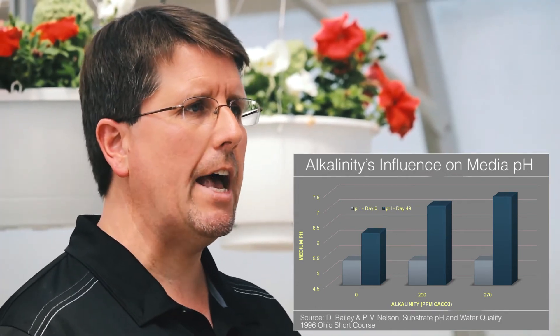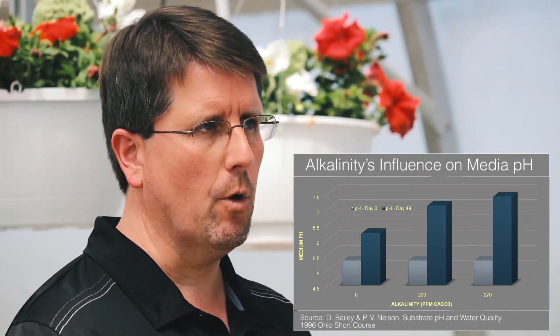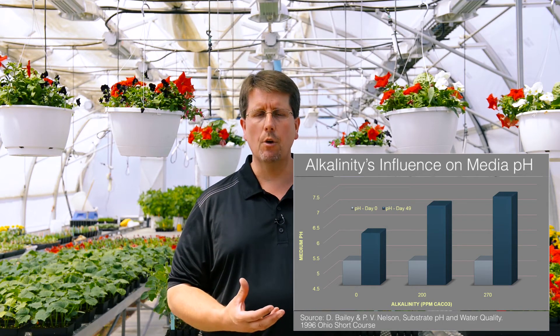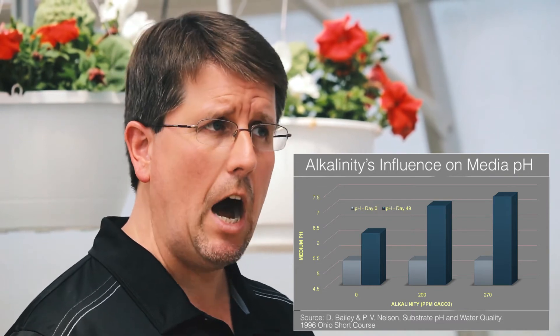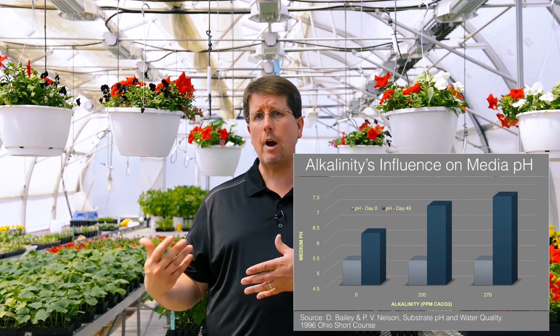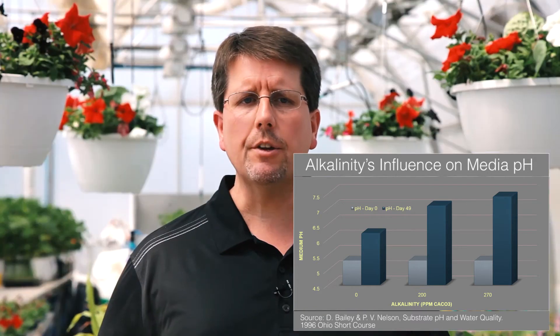It's the water alkalinity that has a direct relationship on the pH of the growing media. Looking at this chart, there are three different treatments with three different water types: the first has a water alkalinity of zero, the next is 200 which is kind of high, and the third is an alkalinity of 270. We take a vinca crop, watering it with fertilizer on a constant basis of 13-2-13, and track over seven weeks what happens to the pH of that growing media.